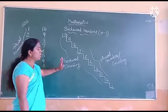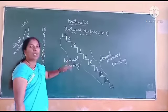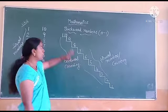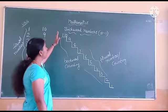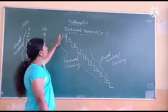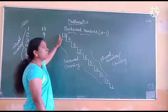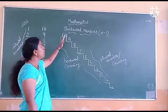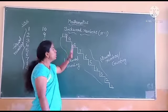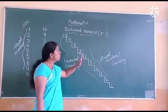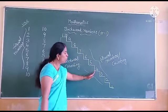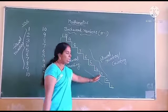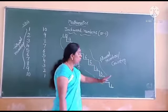Backward counting — we move from the back side: 10, 9, 8, 7, 6, 5, 4, 3, 2, 1.